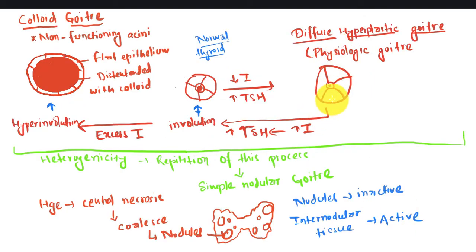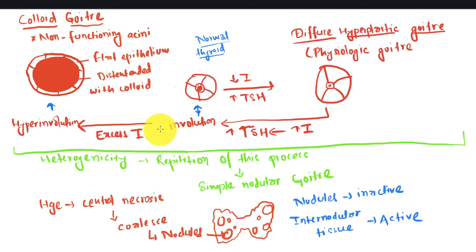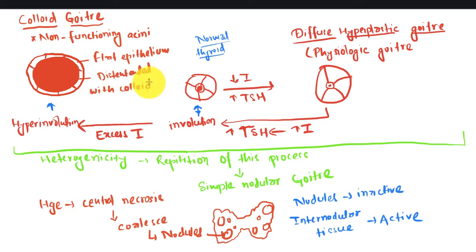You can see here the diffuse hyperplastic goiter. When we give iodine there will be an increase in TSH, resulting in involution of the diffuse hyperplastic goiter towards the normal follicle. If we give excess iodine during this condition it will result in hyper involution of the gland, making it fully distended with colloid and flat epithelium, named colloid goiter, which is a non-functioning acini. So due to deficiency in iodine there is diffuse hyperplastic goiter, and when you give iodine it will involute. When the iodine is excess it will cause colloid goiter.